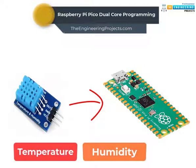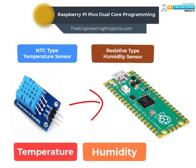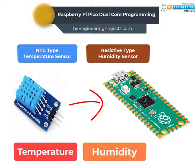The DHT module comes with two input sensors. One is an NTC type temperature sensor and another is a resistive type humidity sensor. A microcontroller is also present inside the DHT module which receives the analog input from both the temperature and humidity sensors and provides a digital output over a single wire protocol for user interface.